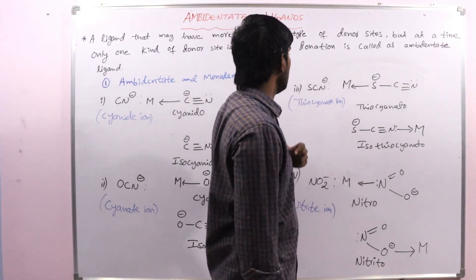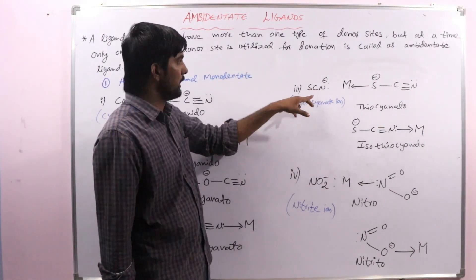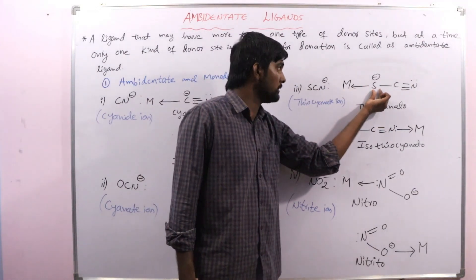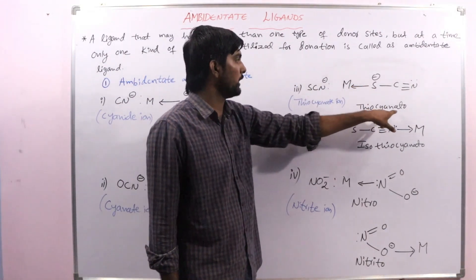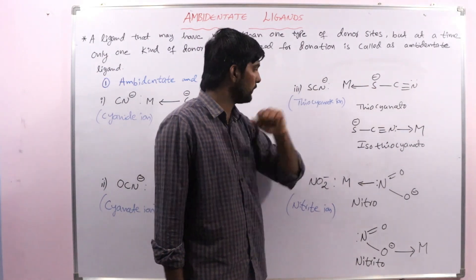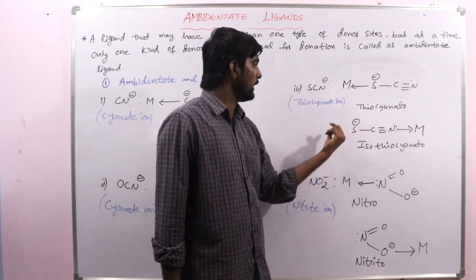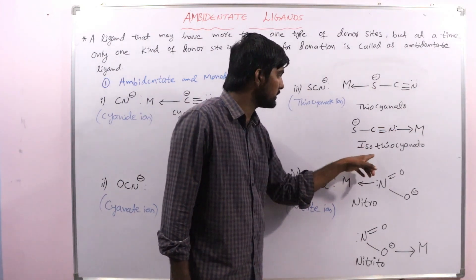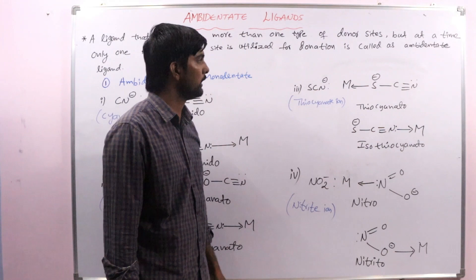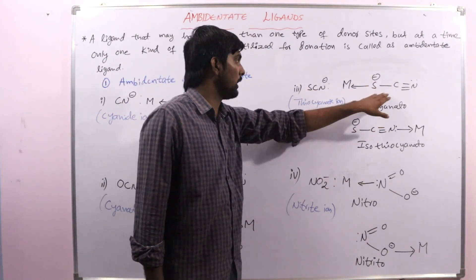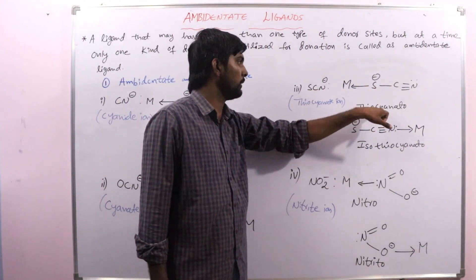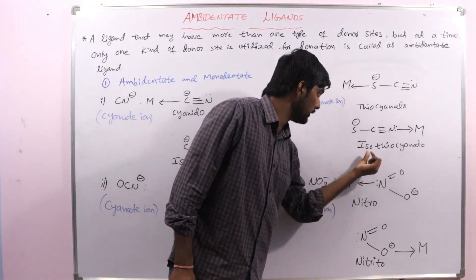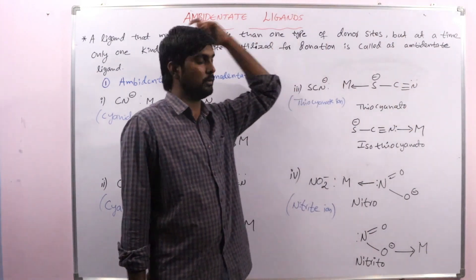Next is the thiocyanate ion, SCN⁻. If sulfur is forming a bond with the central metal atom, that is thiocyanato. If the ligand is forming a bond through the nitrogen atom with the central metal atom, then that is isothiocyanato. So: donor atom is sulfur — thiocyanato; donor atom is nitrogen — isothiocyanato.